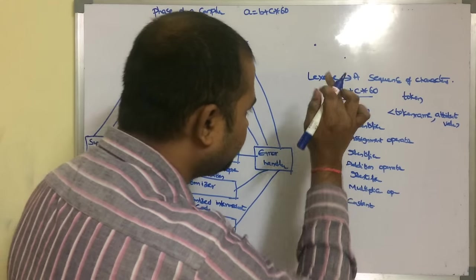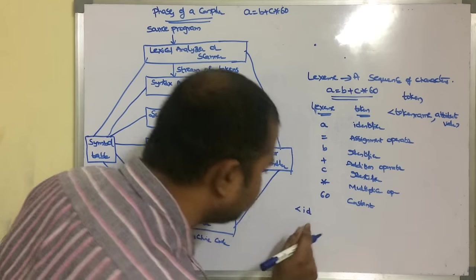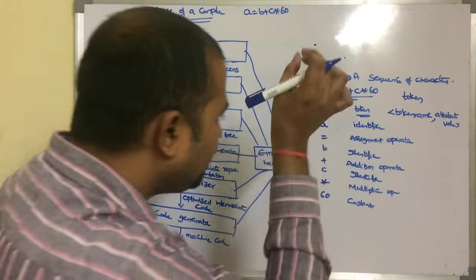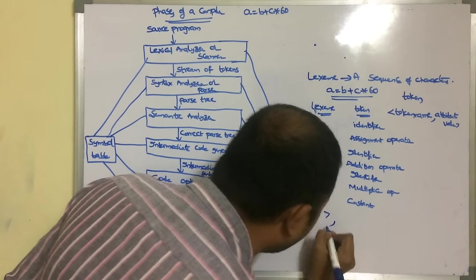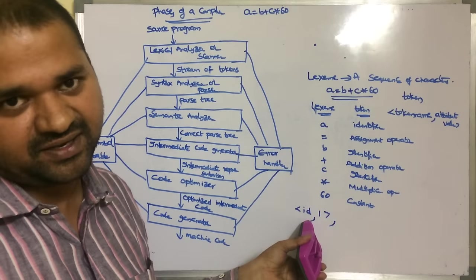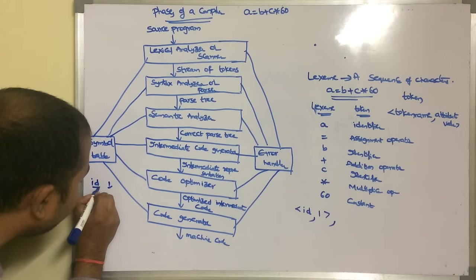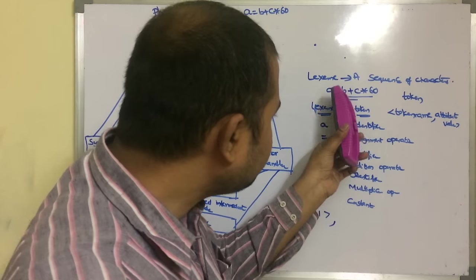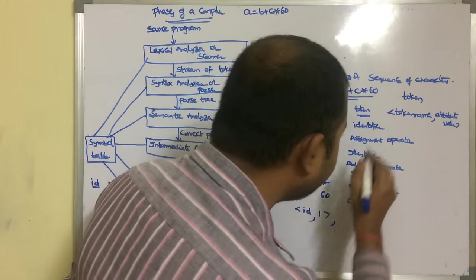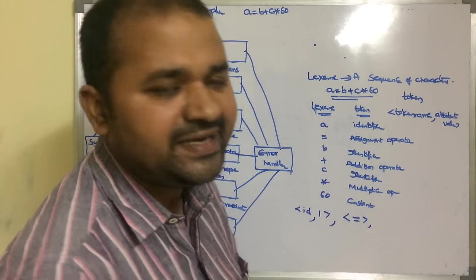Let's represent the source program in the form of tokens. The first token is A — it is an identifier, represented as ID comma 1 in angular brackets, where ID stands for identifier and 1 is the attribute value used to retrieve information from the symbol table. = is an operator so it has no attribute value. B is an identifier: ID comma 2. + is an operator with no attribute value.